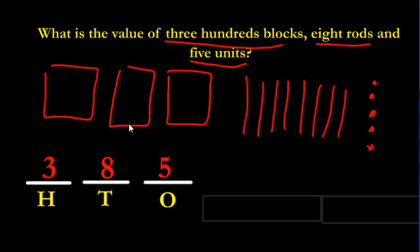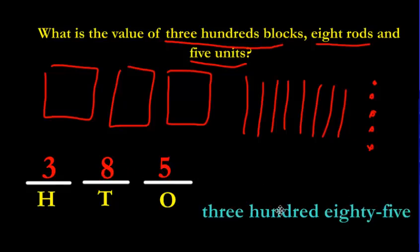Well, why did I have to draw these blocks? I could have just taken these numbers and put them in. Yeah, I know you could have done that. But it's good to practice drawing these blocks because the questions get harder and more challenging the further we go into this unit. So it's good practice to start from now. So how do we say this number? 300s makes 300. 8 tens makes 85. 385.